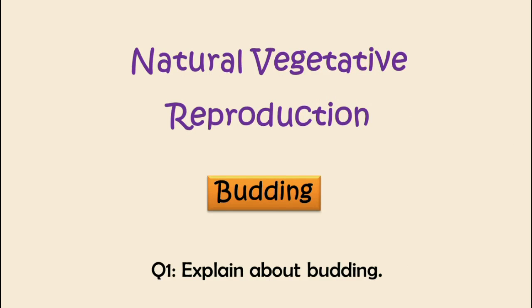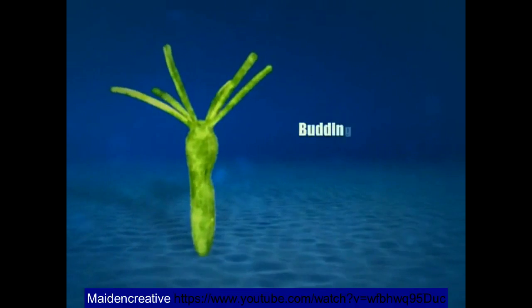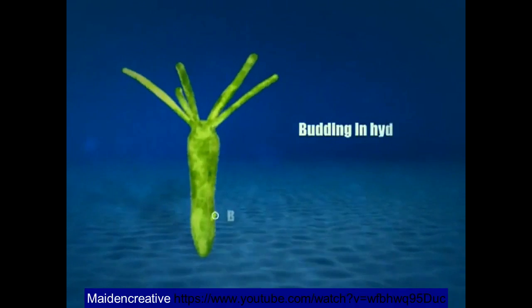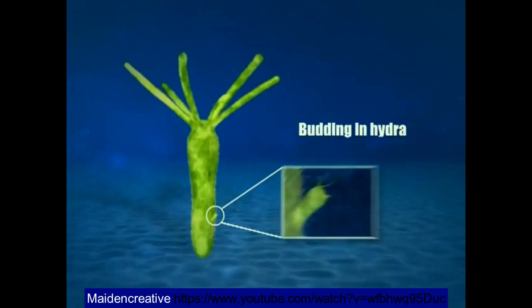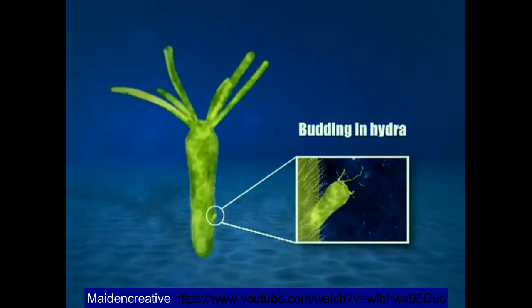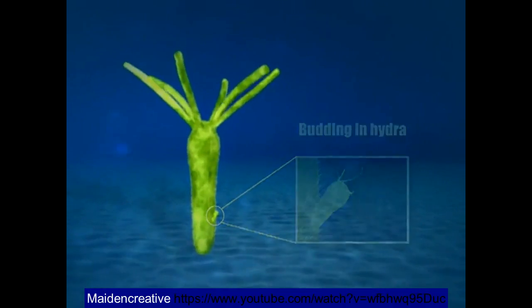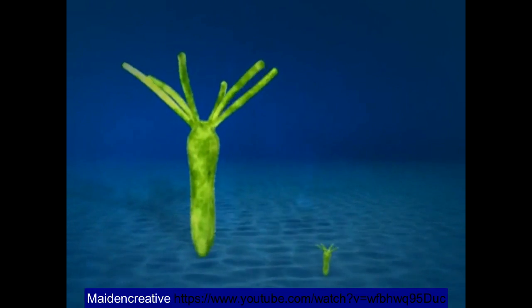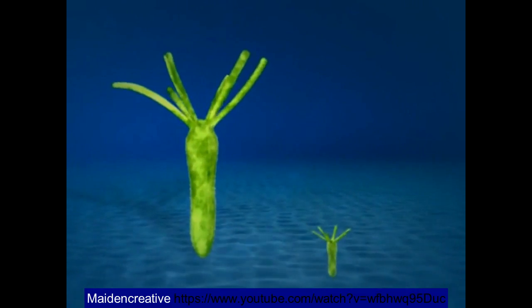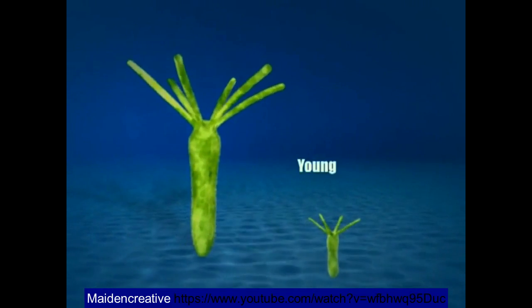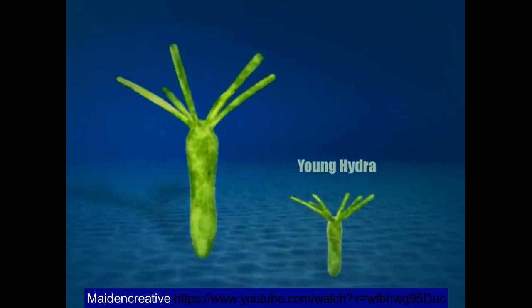These are the types of natural vegetative reproduction. Budding. In the process of budding, a small protrusion is formed on the side of the body. The protrusion is called a bud. This bud becomes large and independent, then it detaches from the parent's body, grows and develops into a new individual.